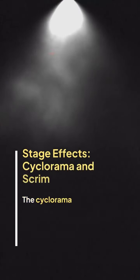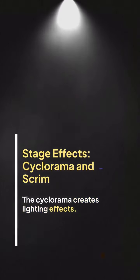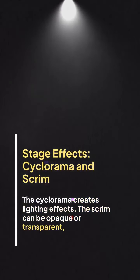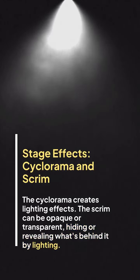The cyclorama creates lighting effects. The scrim can be opaque or transparent, hiding or revealing what's behind it by lighting.